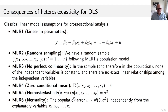Assumption four is mean independence of the error term from the regressors — the essential assumption needed for causal interpretation, implying zero correlation between u and the x's. Assumptions five and six concern second moments. Assumption five is homoscedasticity: the variance of u is sigma squared for all observations i and does not depend on x. Assumption six is normality of the error term. Please note: we don't need normality for most results. OLS unbiasedness does not require normality.